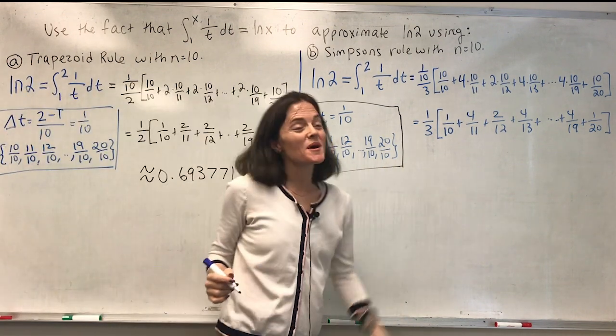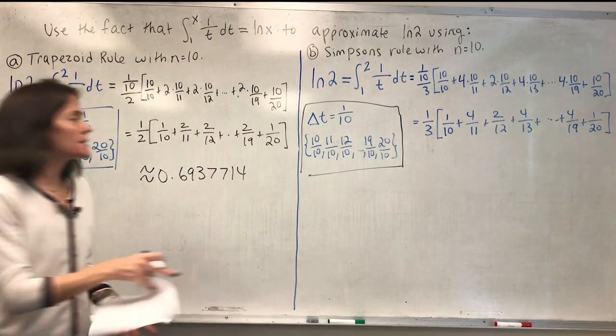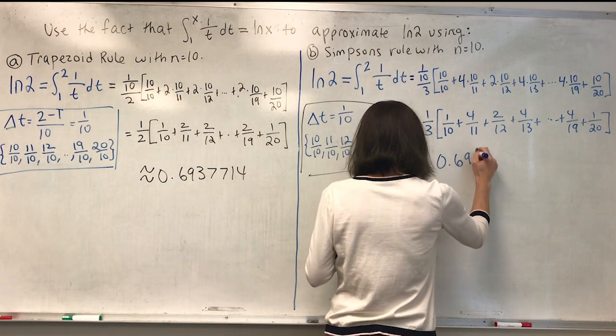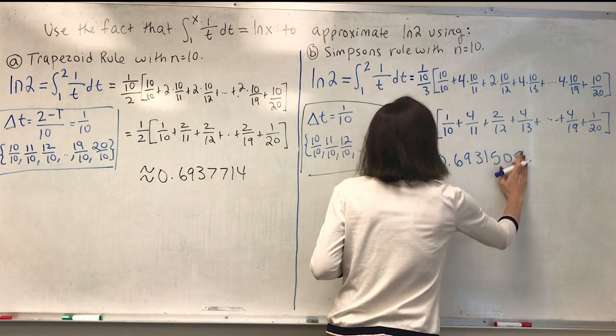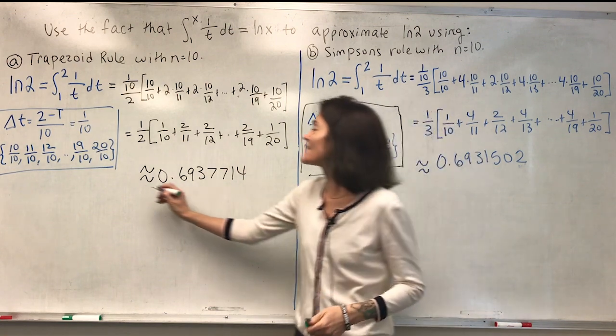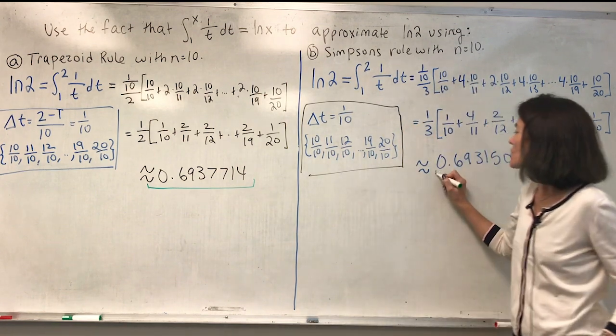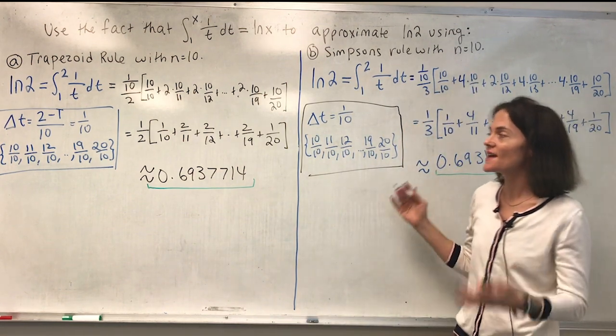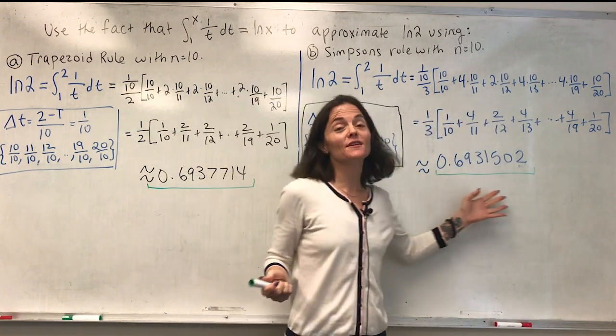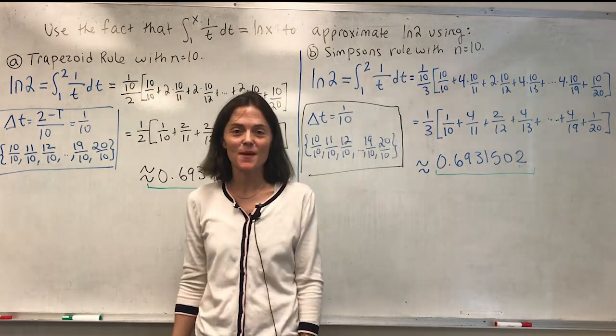And when you put this in a calculator, we get that this is approximately 0.6931502. So what we have found: this is our approximation of ln 2 using the trapezoid rule, this is our approximation of ln 2 using Simpson's rule, and this is a much better approximation as we know. Simpson's rule gives better approximations than the trapezoid rule.